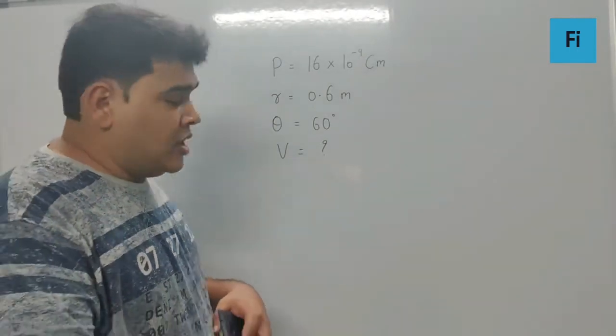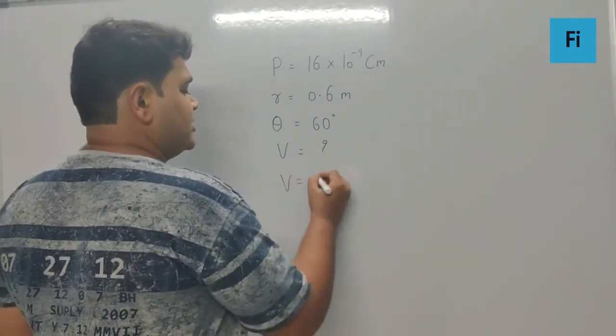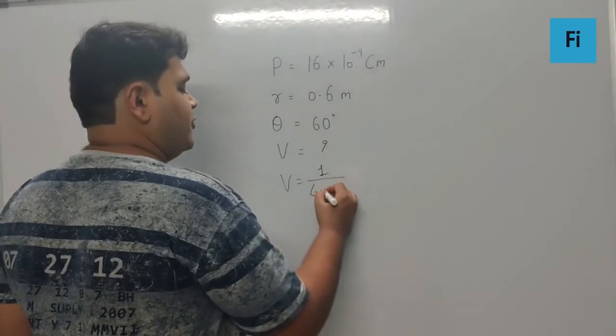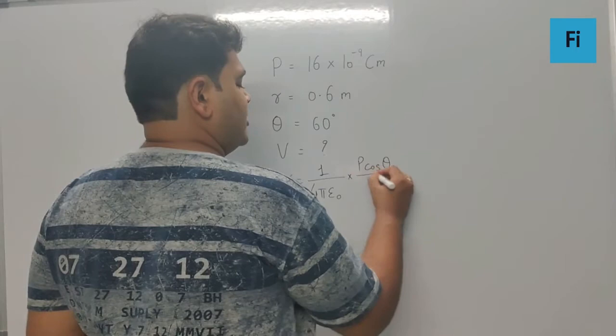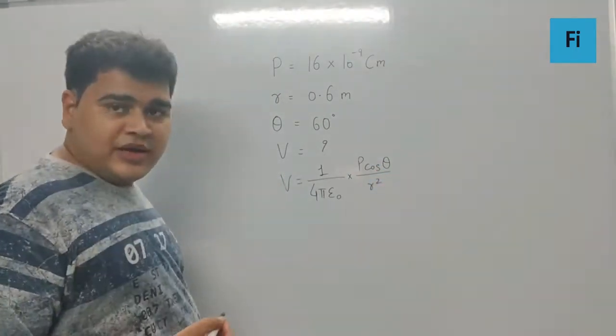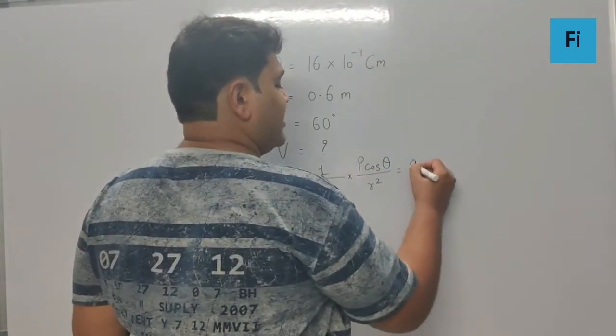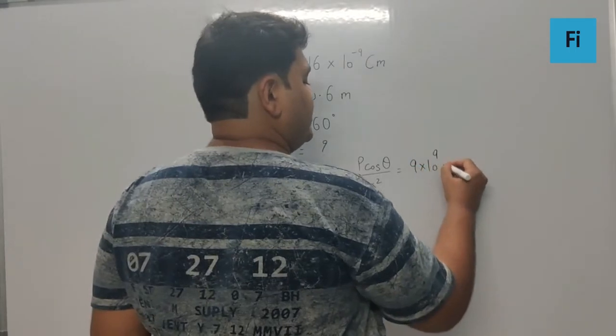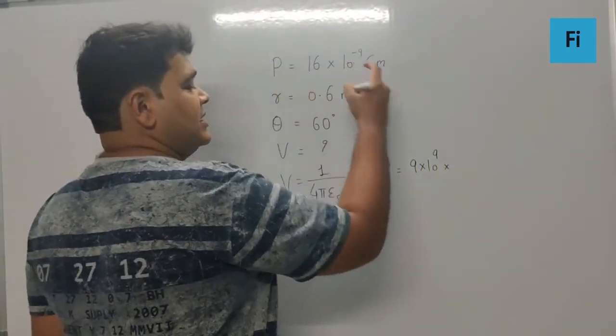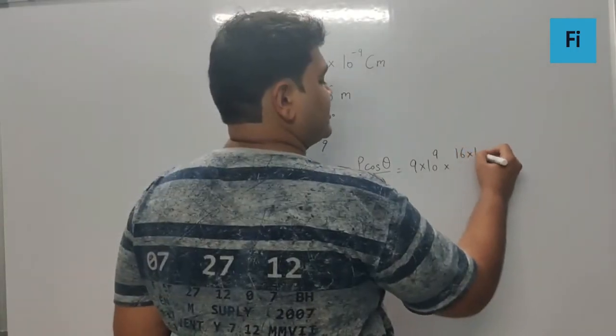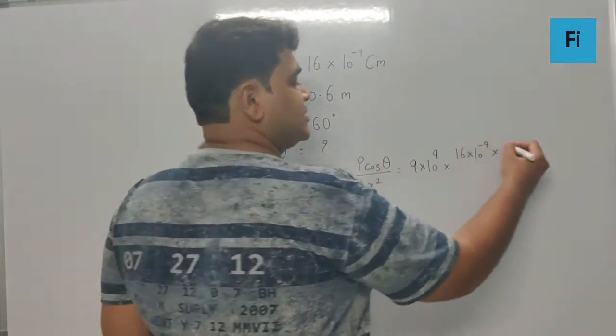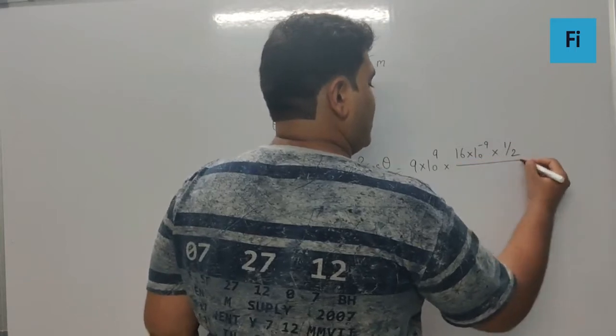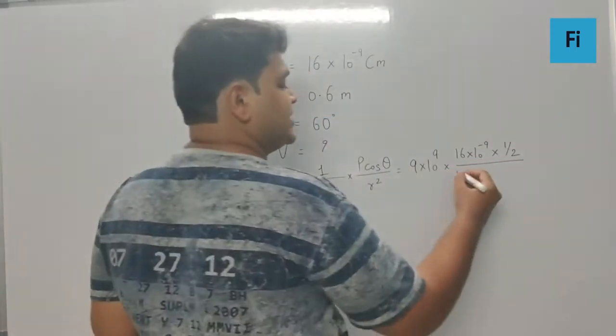We are supposed to find the potential. The formula for potential is 1/(4πε₀) × (p cos θ)/r². Now, 1/(4πε₀) is 9 × 10^9, the value of p is 16 × 10^-9, cos θ where theta is 60 degrees, so cos 60 is half, upon the square of 0.6.